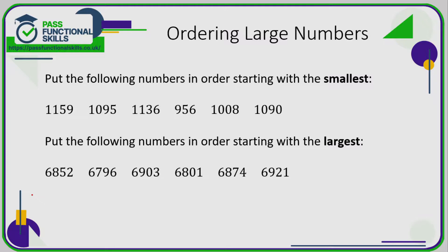Let's take a look at ordering large numbers. In this first example, we've got a four-digit number, another four-digit number, four digits, three digits, four digits, four digits. A three-digit number will always have a lower value than a four-digit number, so 956 is the smallest number of all of these numbers here.